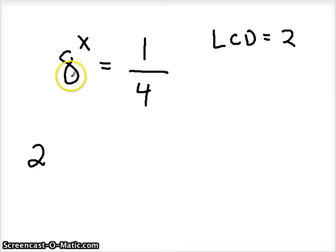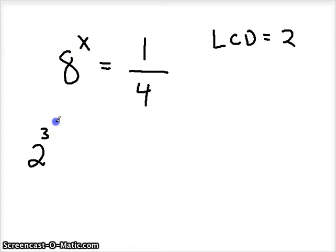So we're going to try and get both of them to have a base of 2. And 2 to what power gives us 8? Well it's 3. And since we already got that x up there, we're going to end up multiplying those two things together. Let's go over to the other side. How do we turn 1/4 into a base of 2? Well first let's get rid of this fraction using negative exponents.